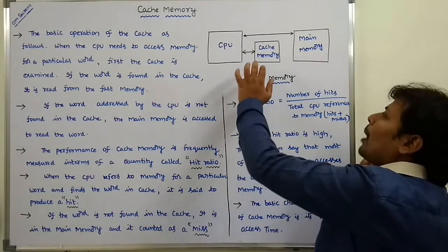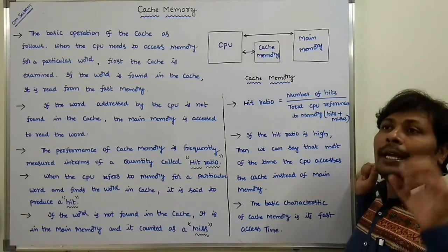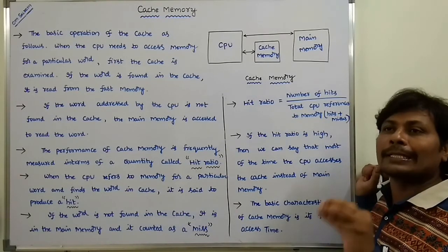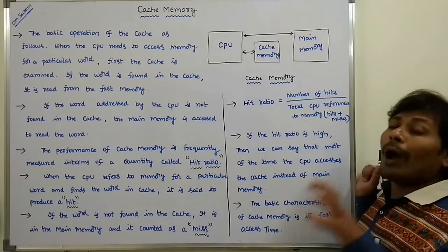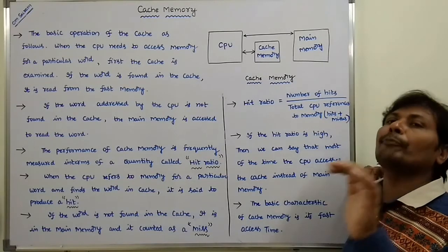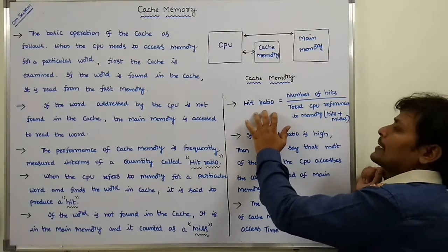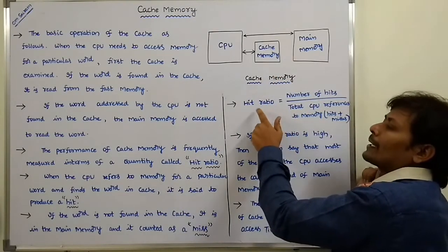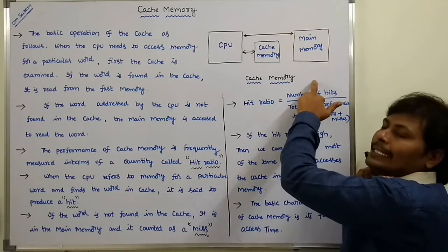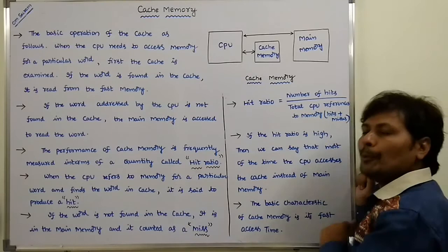The performance of cache memory can be defined in terms of a quantity called hit ratio. By using the hit ratio, we can say whether the performance of the cache memory is good or not. Hit ratio is equal to number of hits divided by the total number of memory references — that is, number of hits plus number of misses, meaning total CPU references to memory.